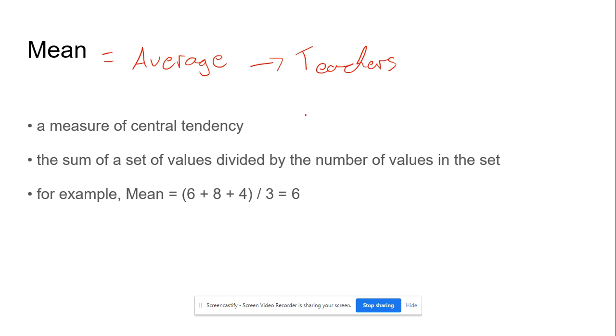For example, if you have 6, 8, and 4, you add them up: 6 + 8 + 4 = 18. Then 18 divided by 3 equals 6. Another example: if we have 10, 15, and 20, that's 10 + 15 + 20 = 45 divided by 3 equals 15. You divide by 3 because there are three numbers.